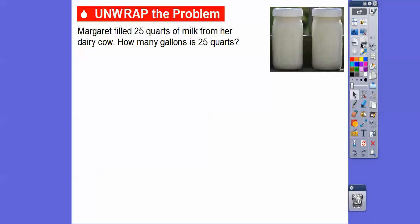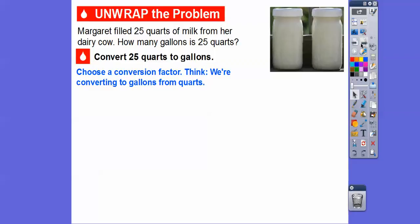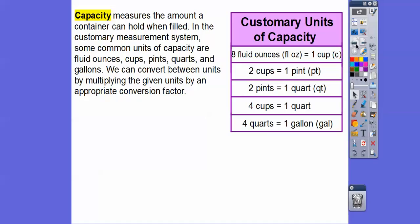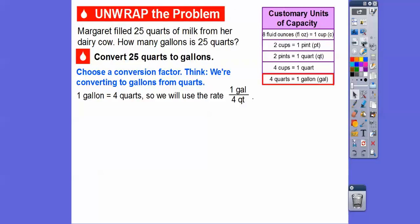Margaret filled 25 quarts of milk from her dairy cow. How many gallons is this? We've got to choose the conversion factor. Here's the conversion factor right here: 8 fluid ounces equals 1 cup—not this one. 2 cups equals 1 pint—nope. 2 pints equals 1 quart. We want quarts and gallons, so we want 4 quarts and 1 gallon right there. We're going to use the ratio of 1 gallon to 4 quarts. Notice quarts are on the bottom so when I multiply with 25 quarts on top, it's going to cancel out with the 4 quarts on the bottom.